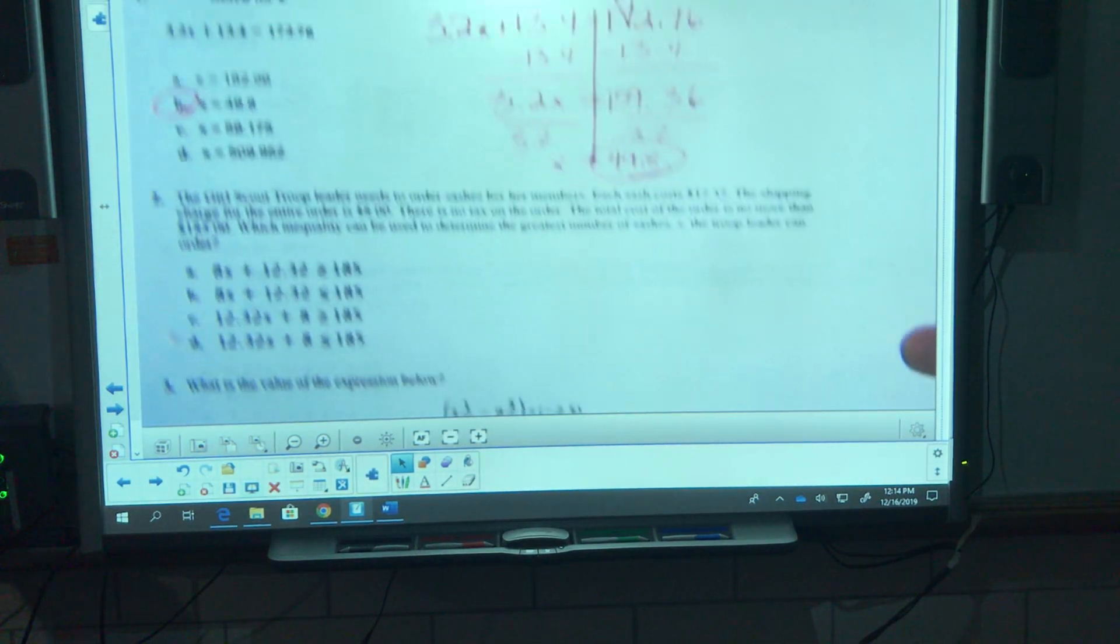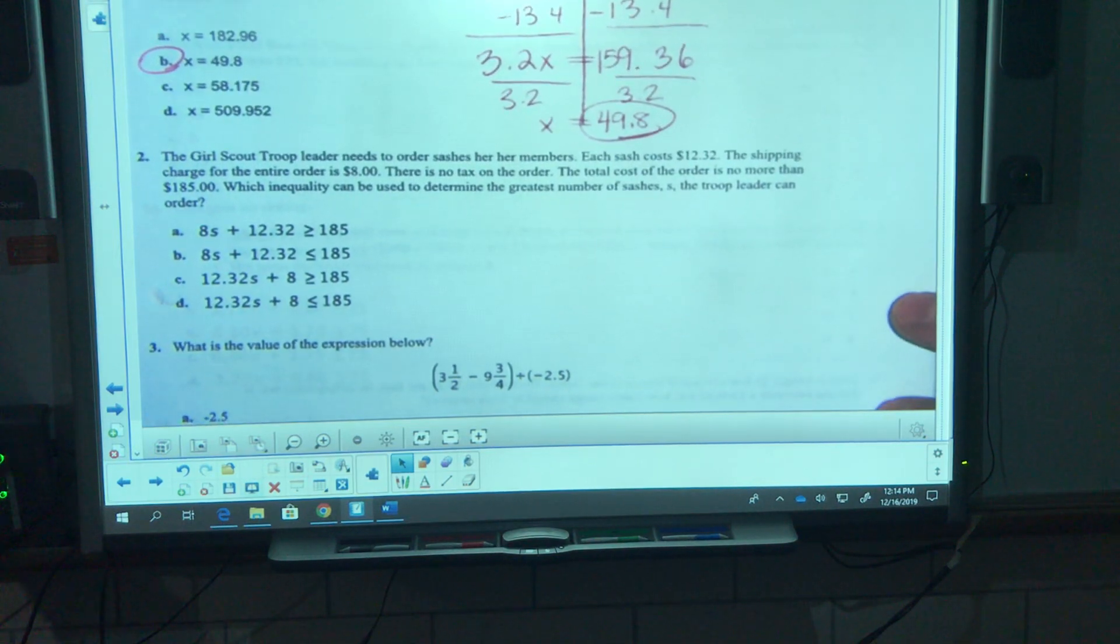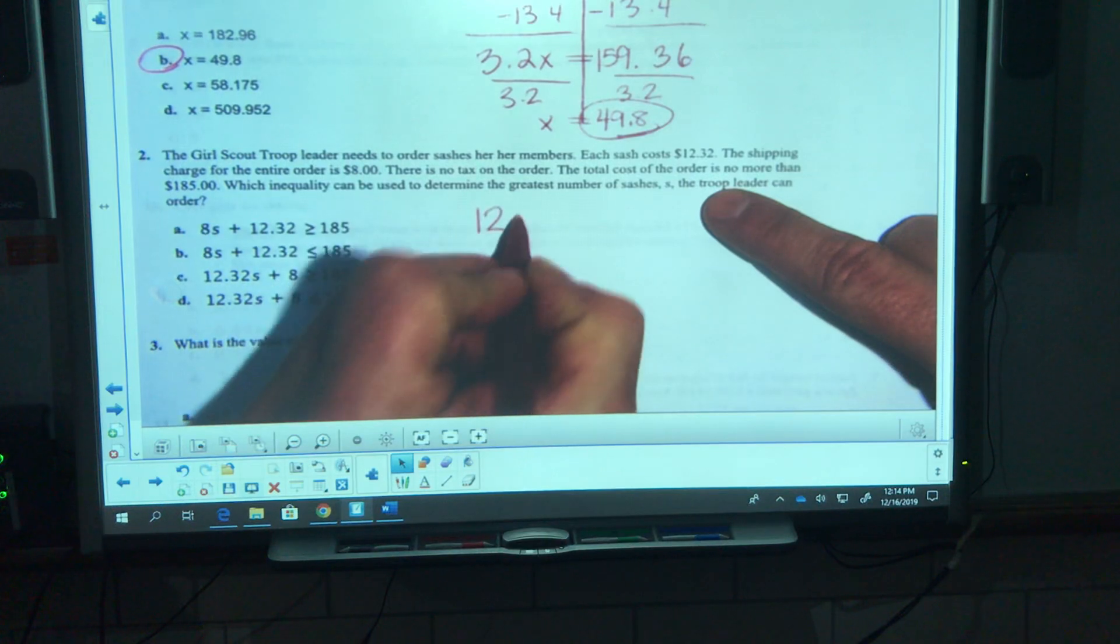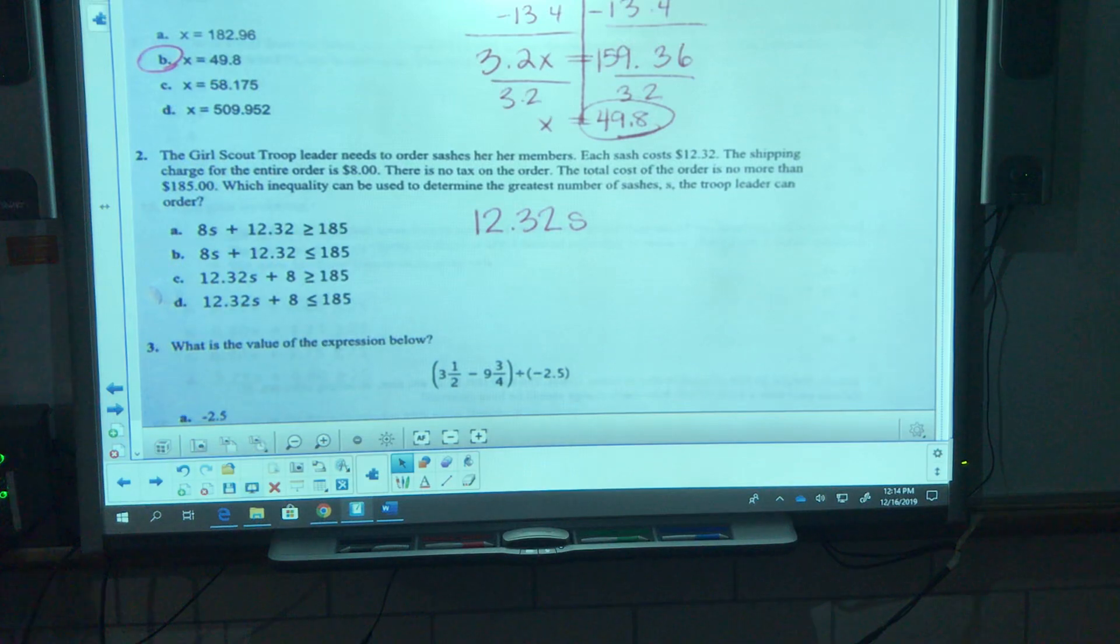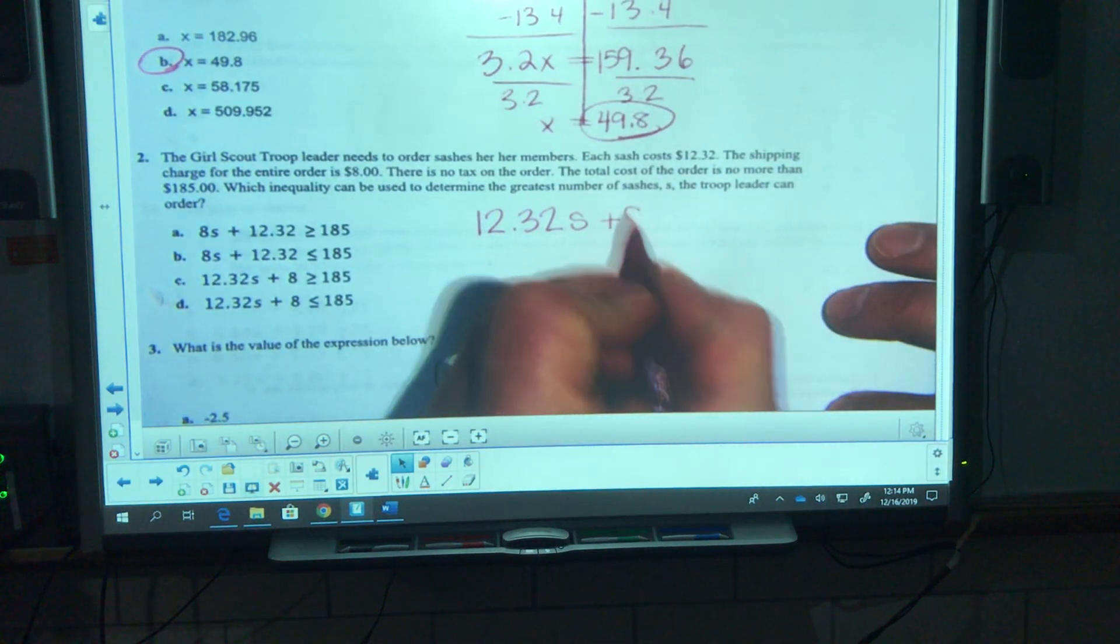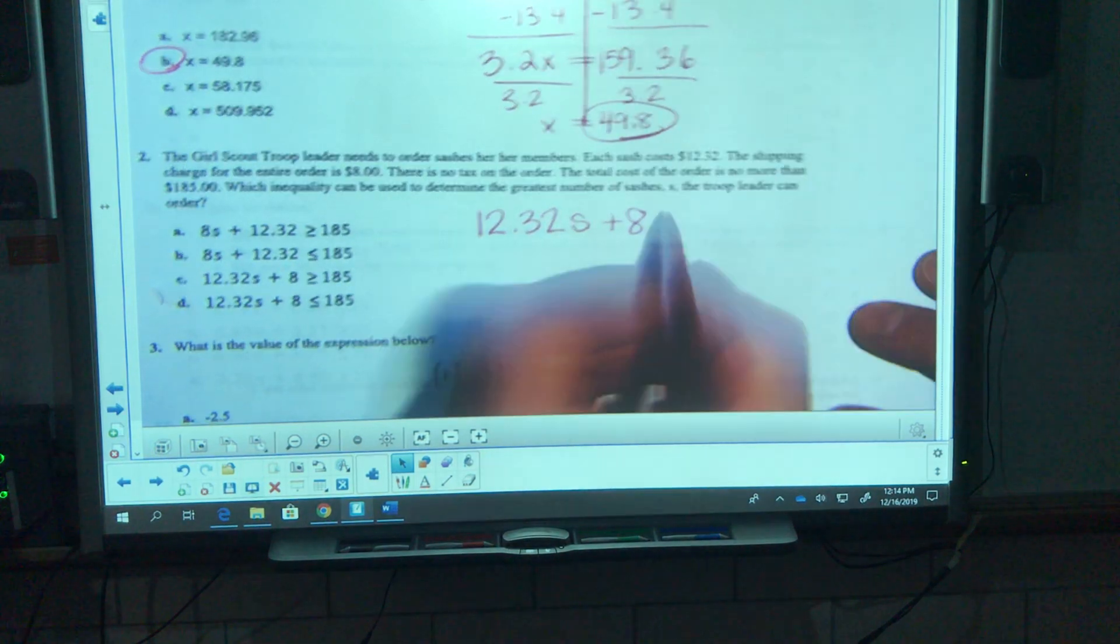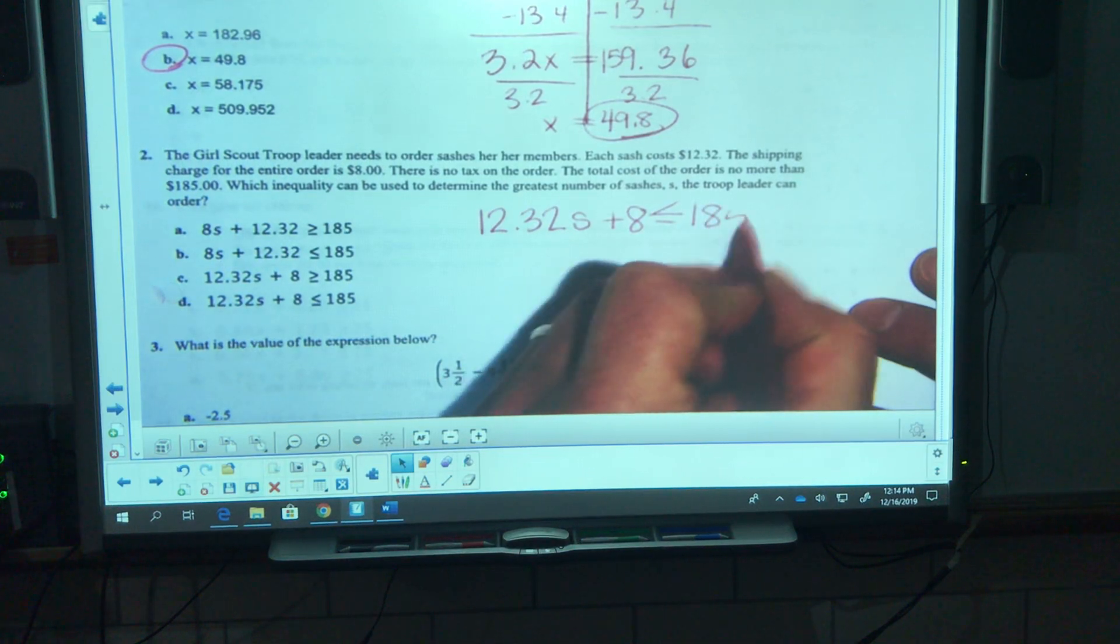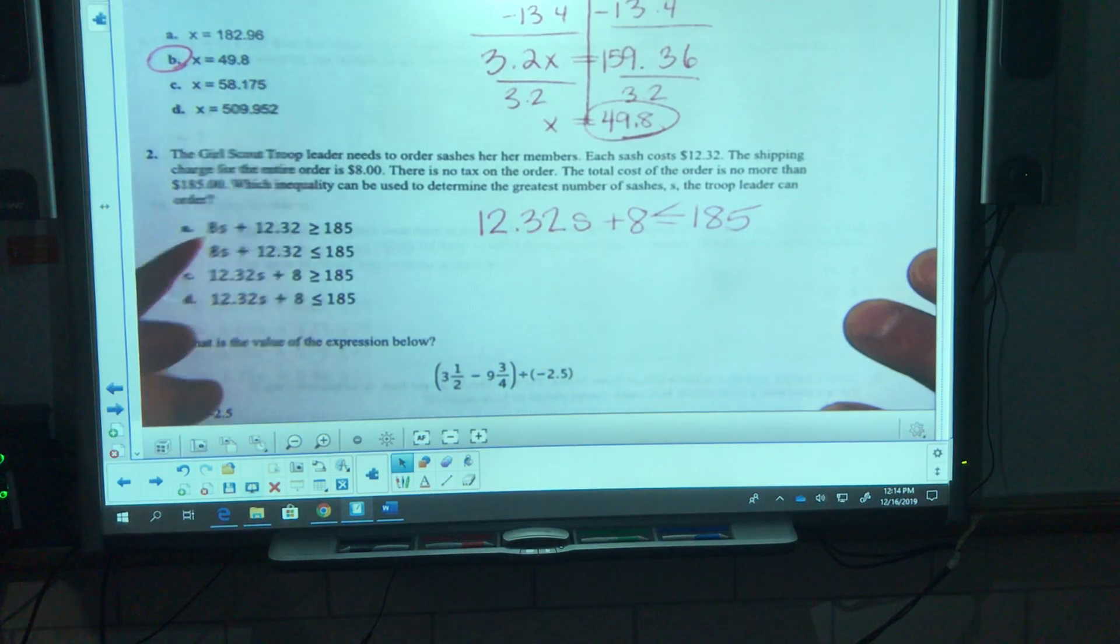Number two, a Girl Scout troop leader orders sashes for her members. The sashes cost $12.32 each. The shipping charge is another eight dollars. The total cost of the order is no more than, so it's going to be less than or equal to $185.